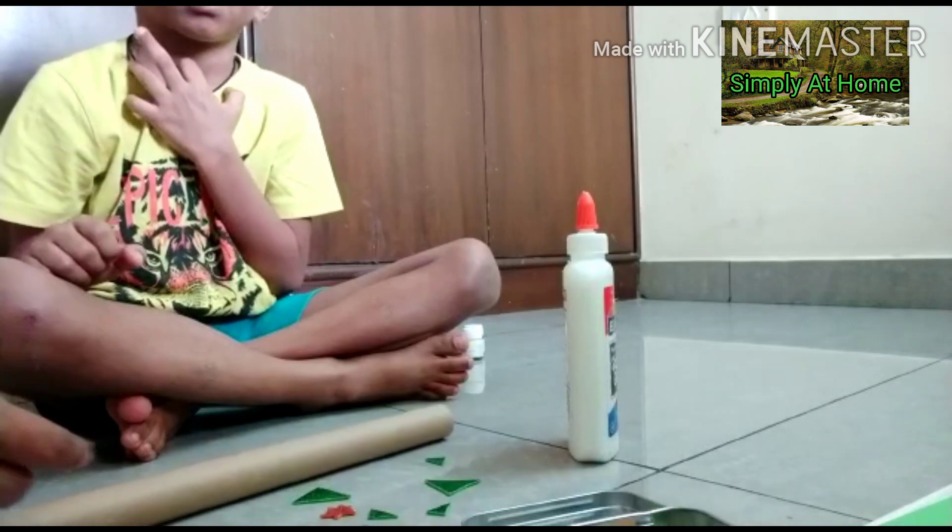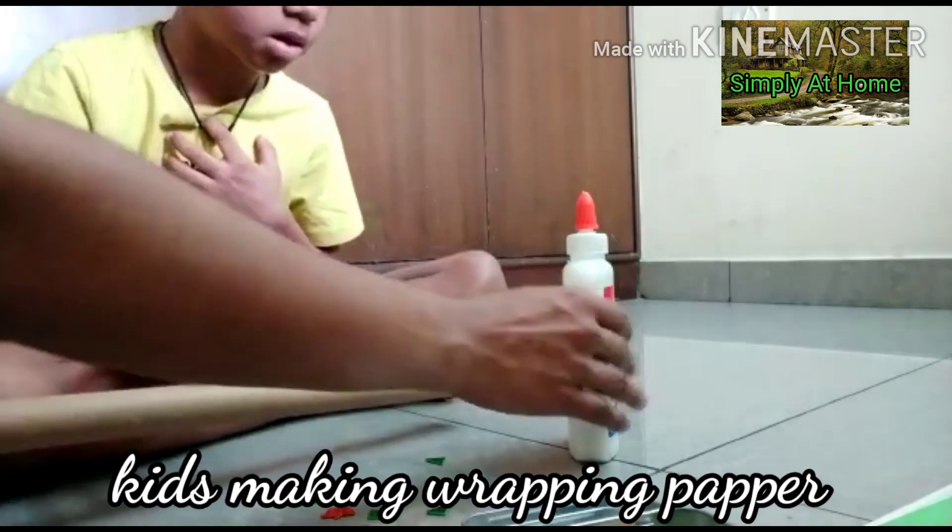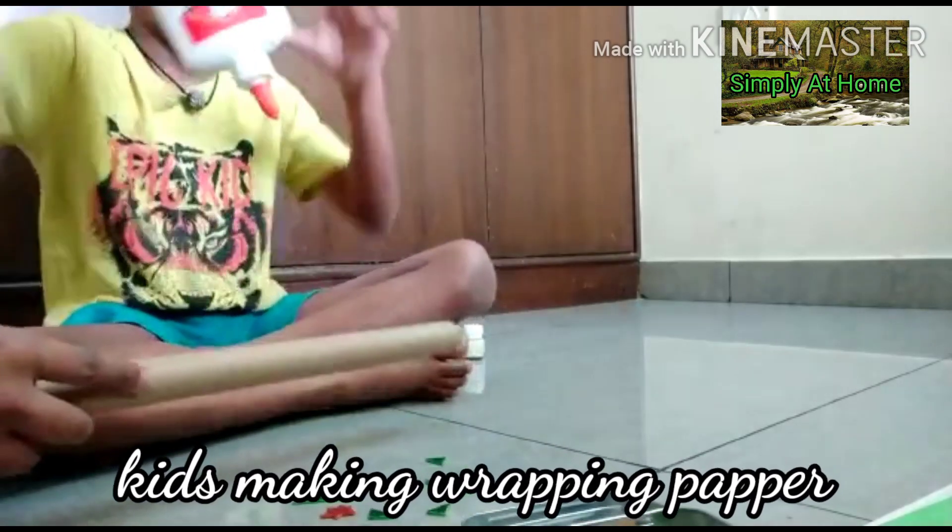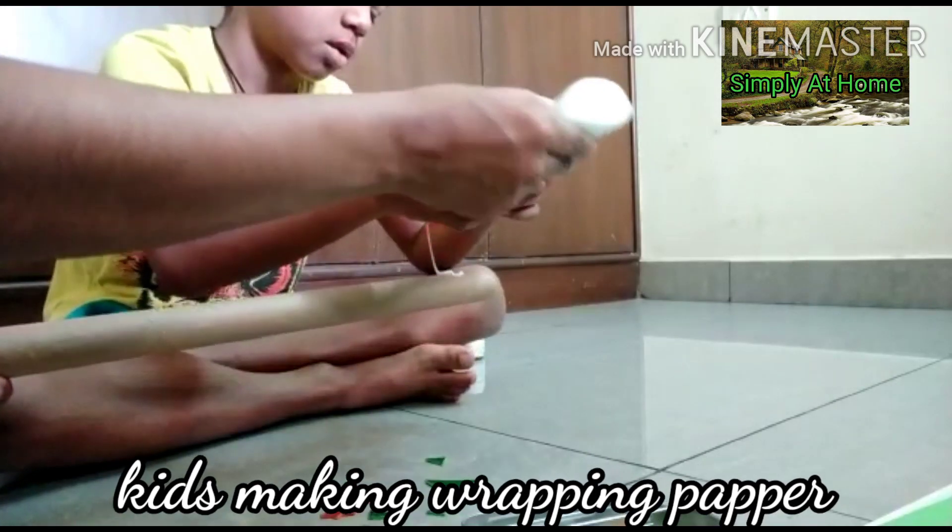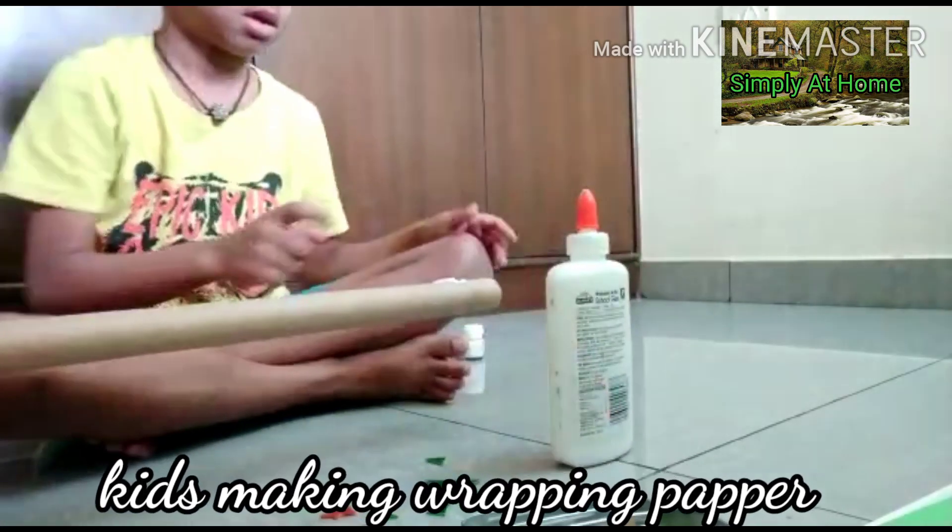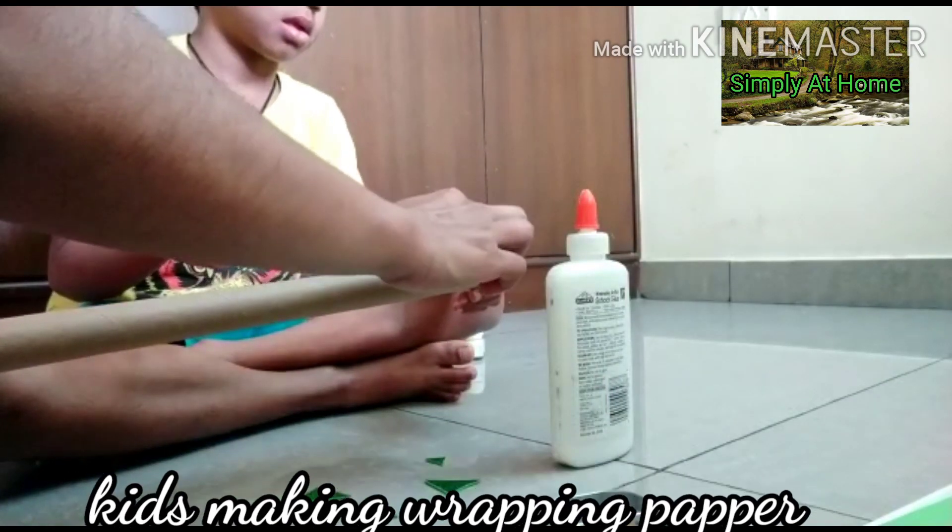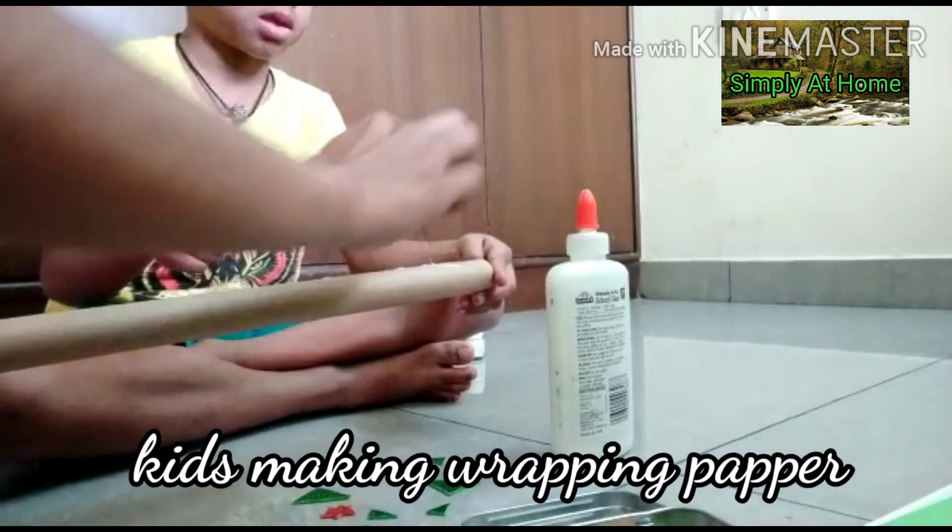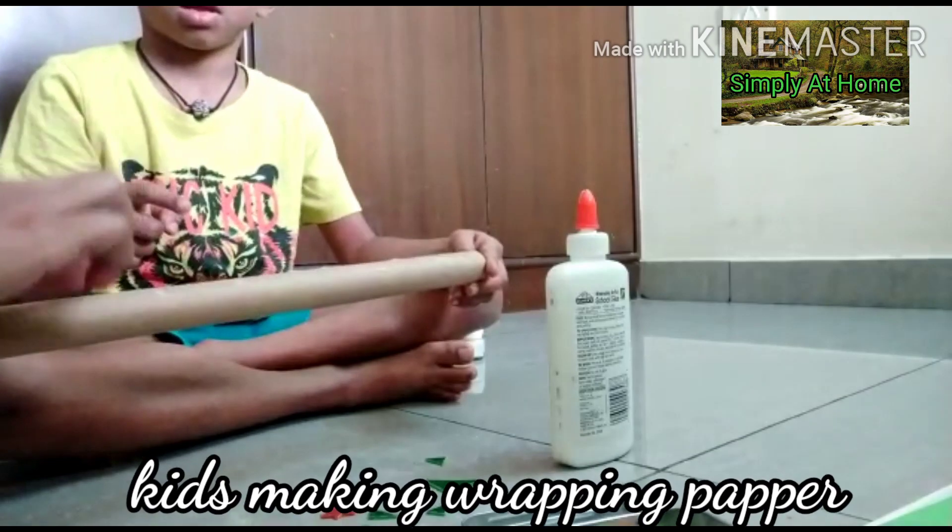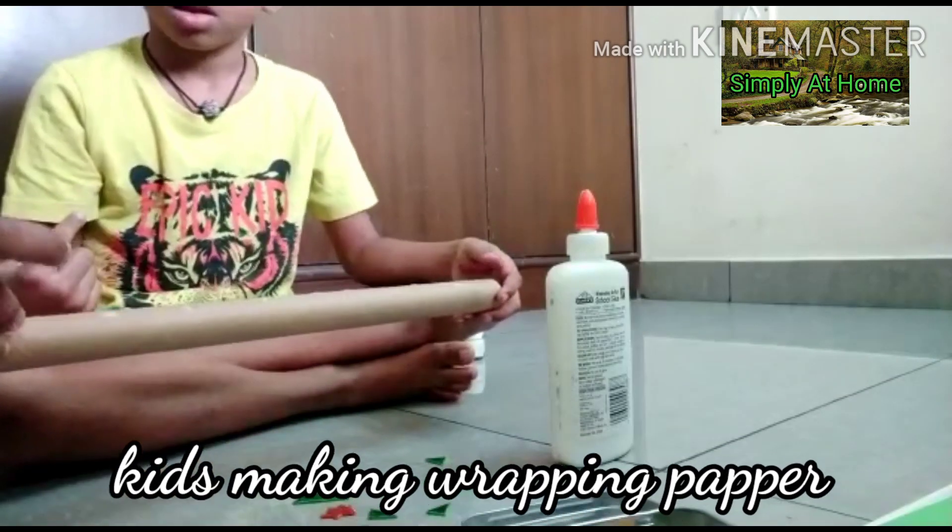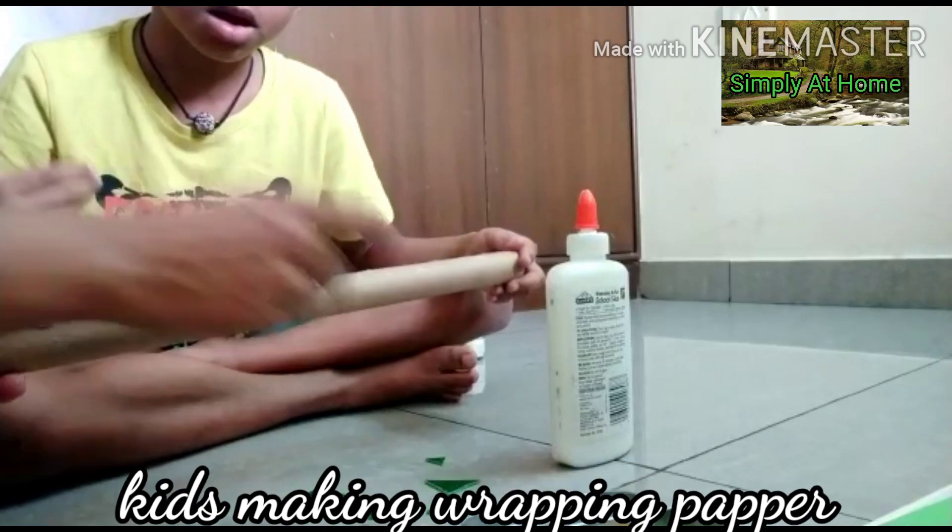All right, now we'll glue the foam pieces onto the roller. Here's the glue - just a little drop will do. That's it, not too much, just a little. Now we can add the pieces. See, I'm adding one here, another one here.